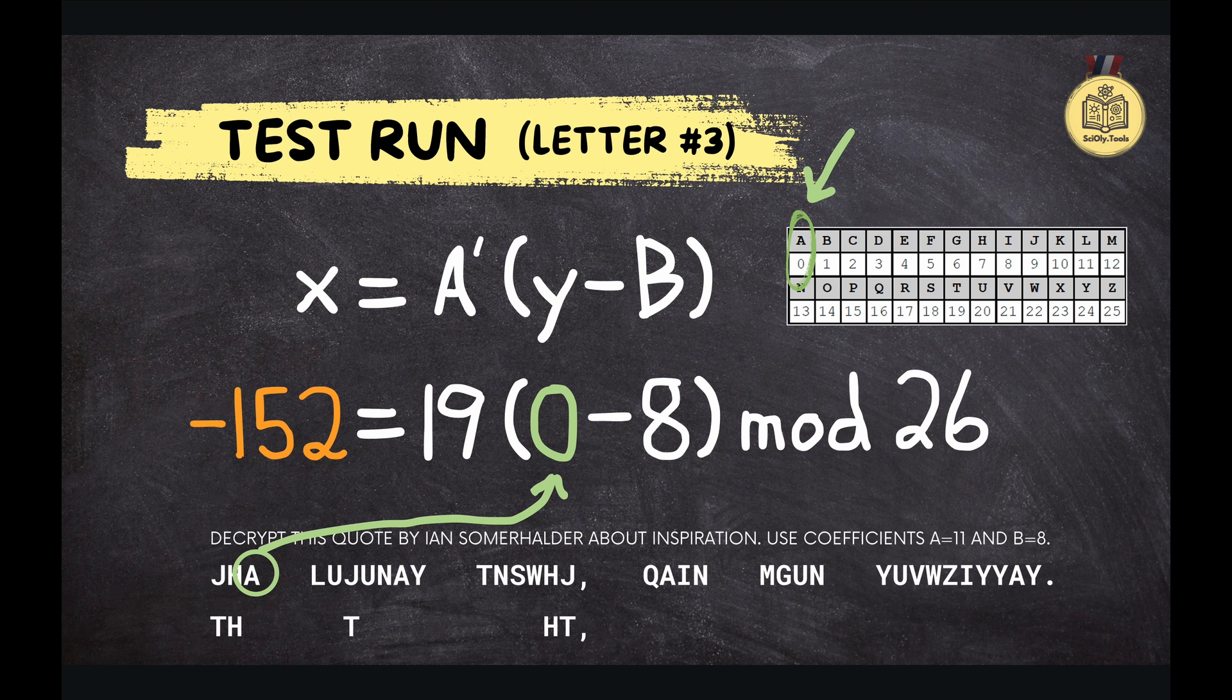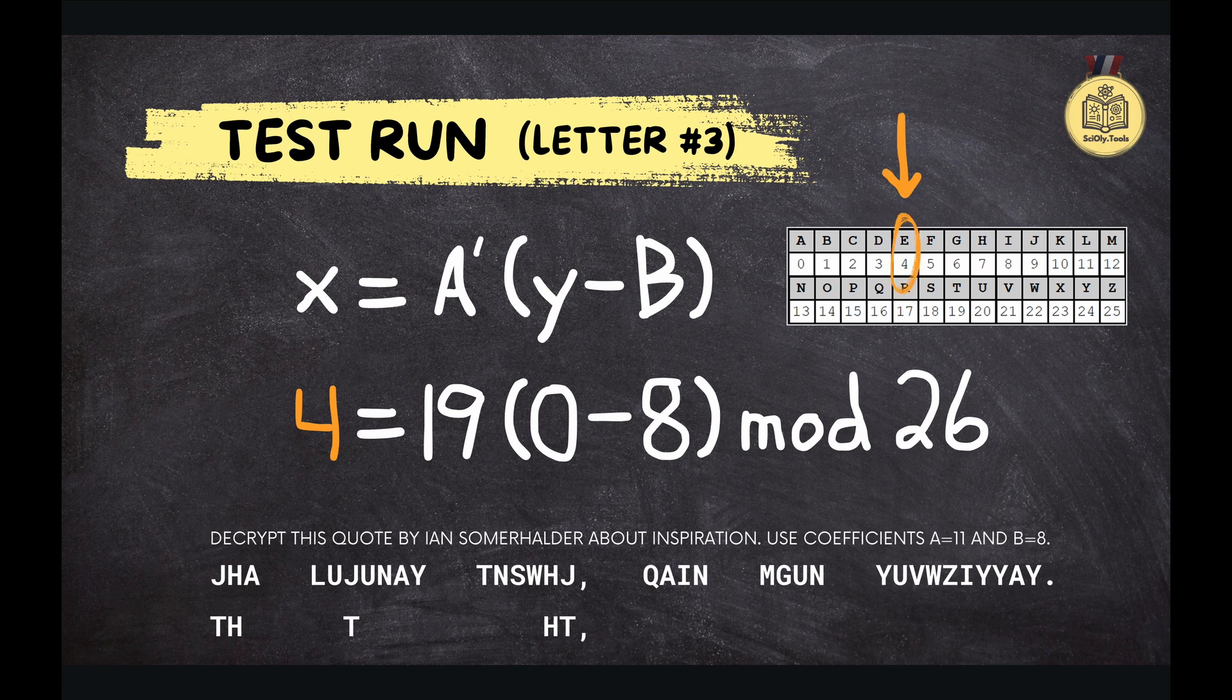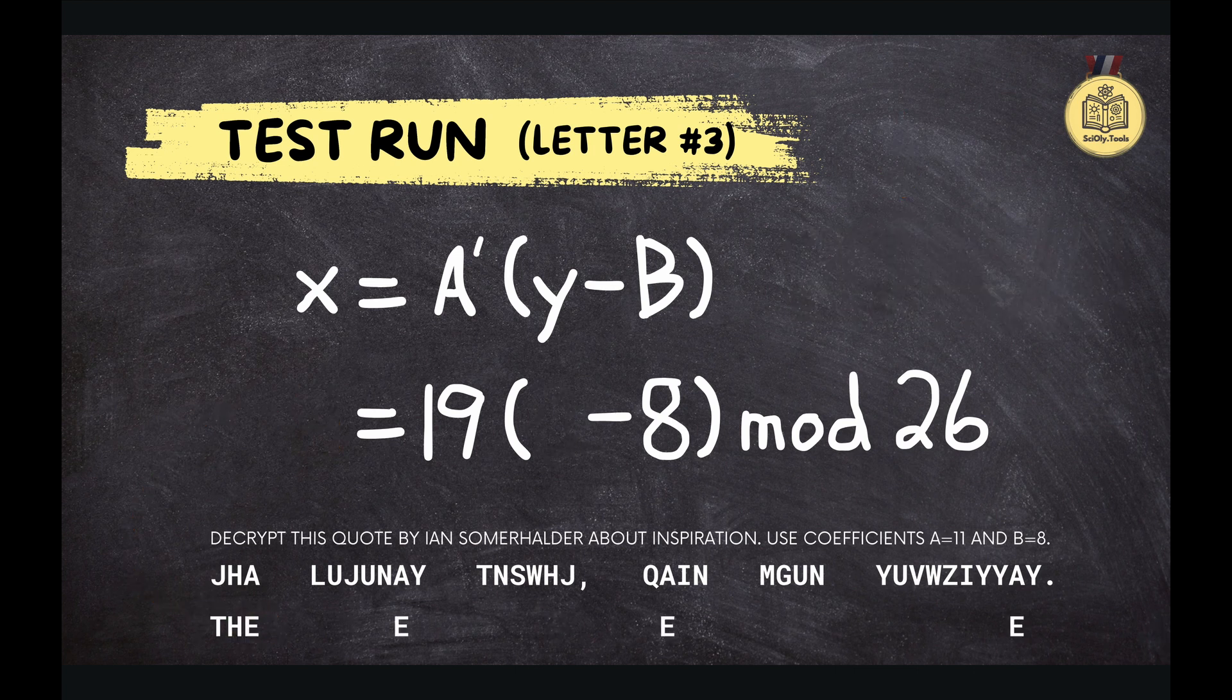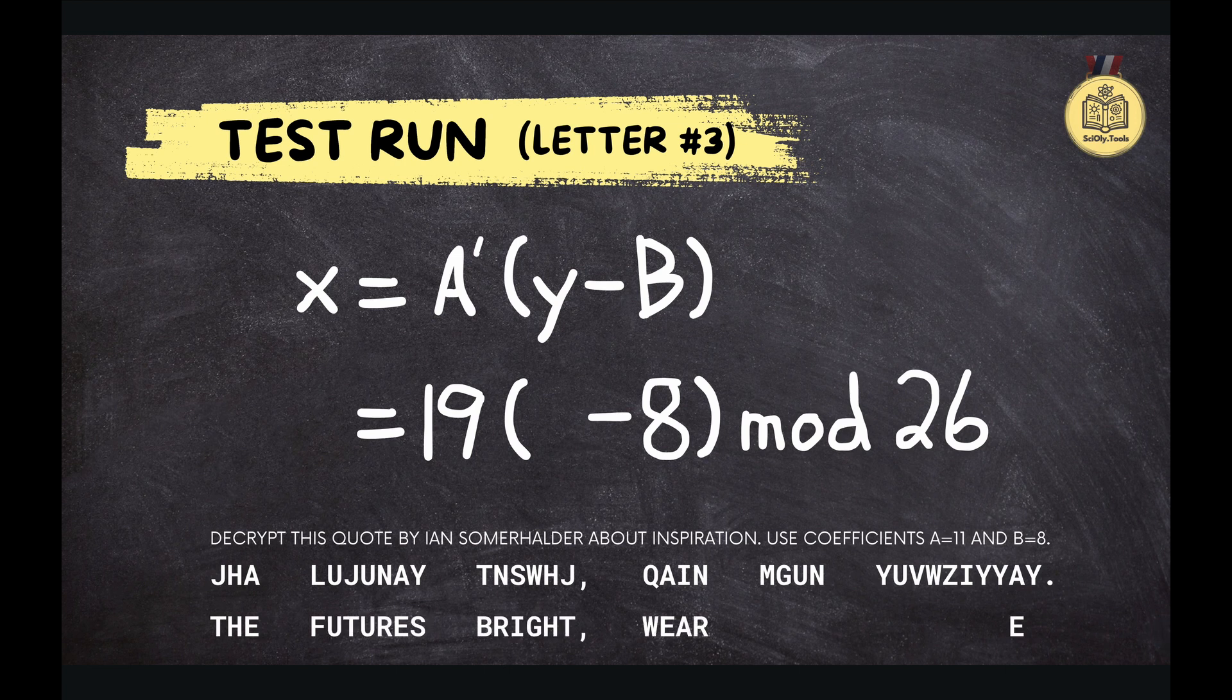Here's a pro tip. Memorizing the multiples of 26 can really speed things up. So instead of adding 26 repeatedly, I could just know off the top of my head that 156 is a multiple of 26. In this case, if we add 156 to negative 152, we get 4. And 4, according to our table, maps to the letter E. This is definitely less intimidating than I thought it would be. We just follow the formula, use our tables, and memorize a few key numbers to make things faster.